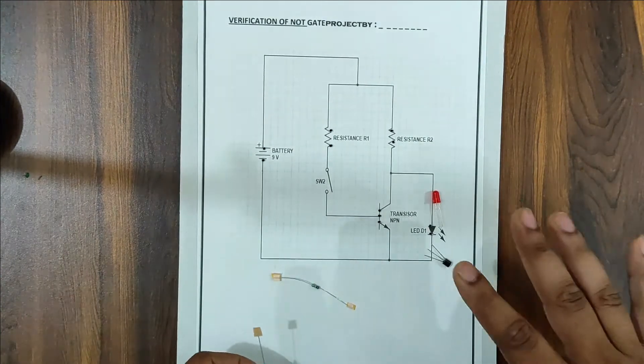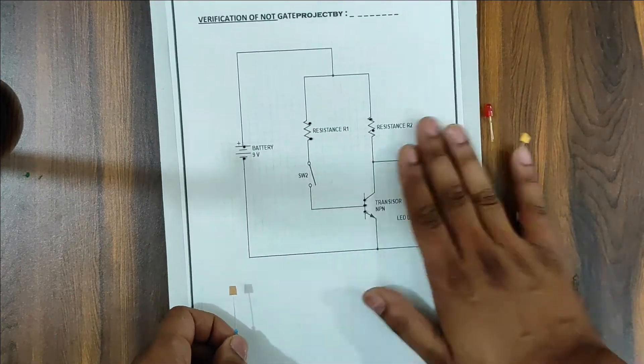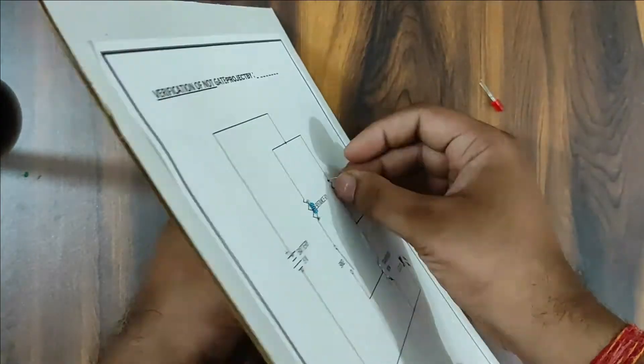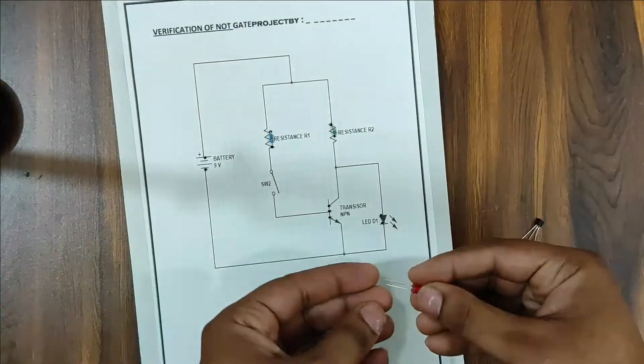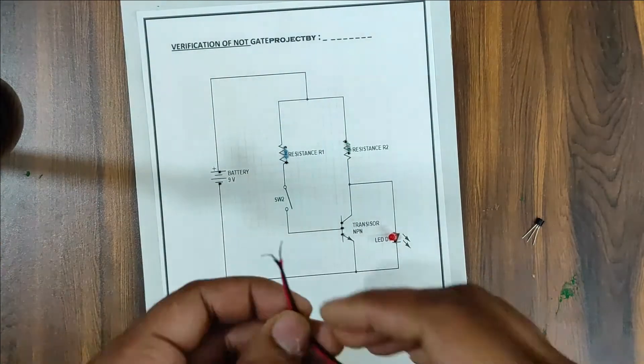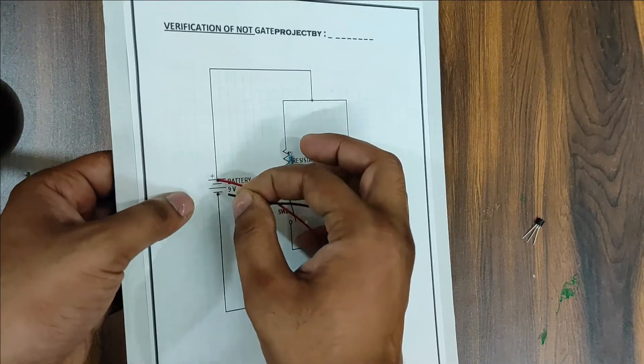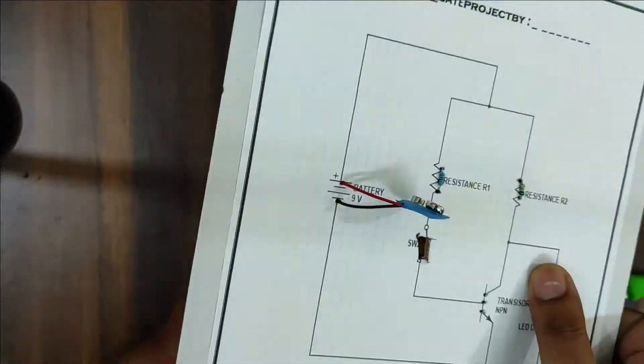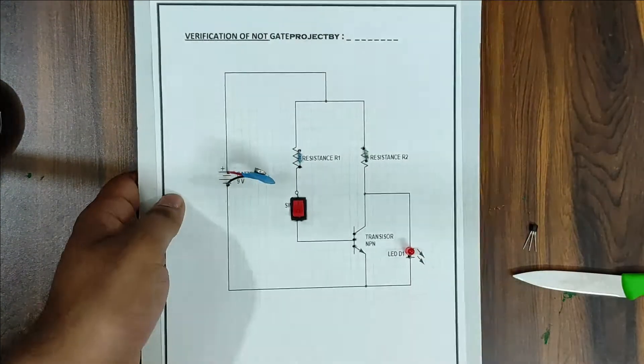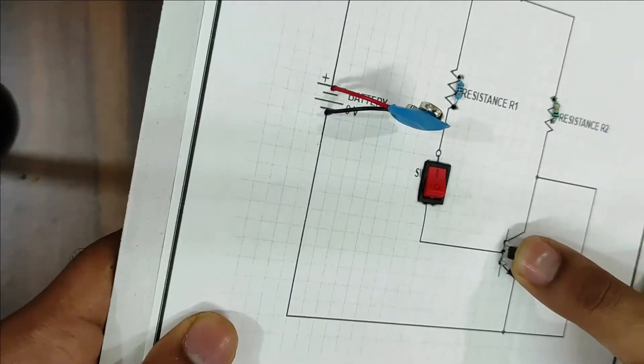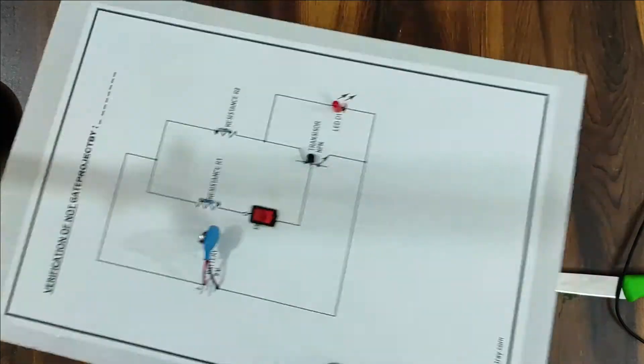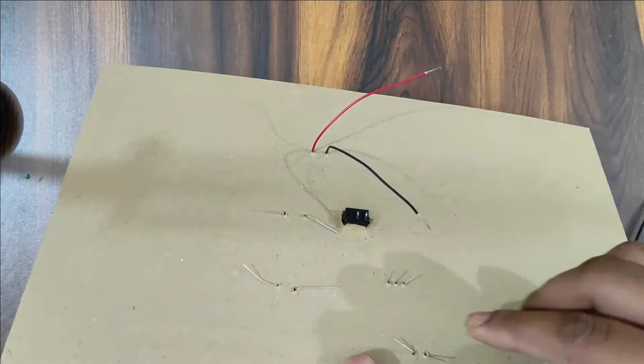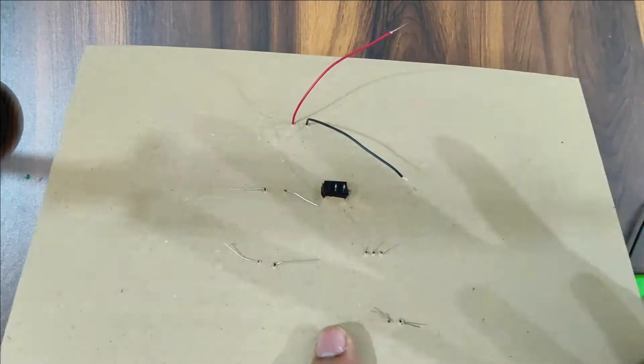Now we will insert these components. We will insert all the components. Now what we will do? First of all, we will use three legs. We will put three legs in the holes so our wire connection will be easy.